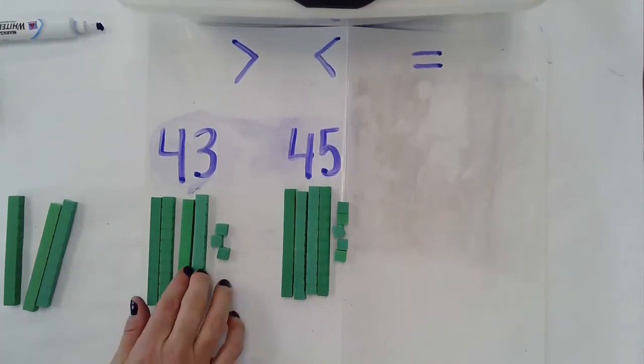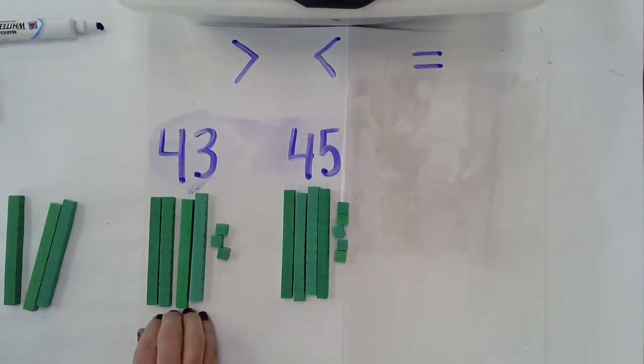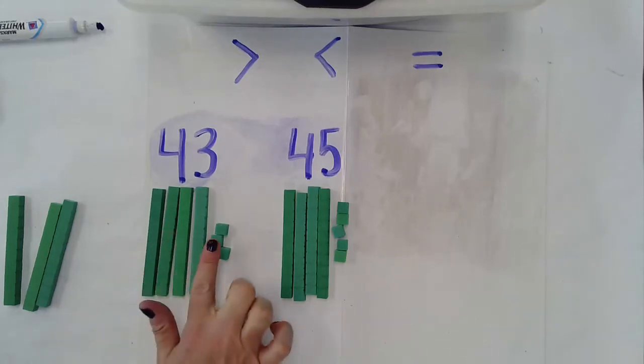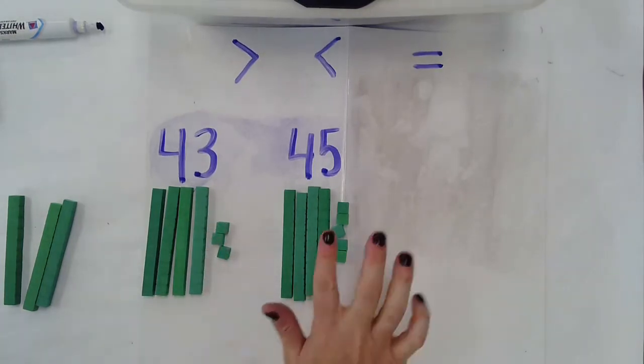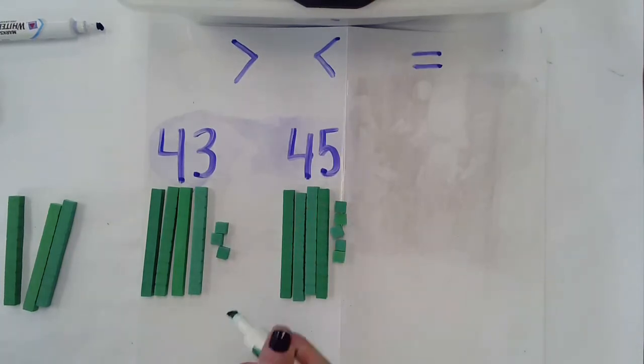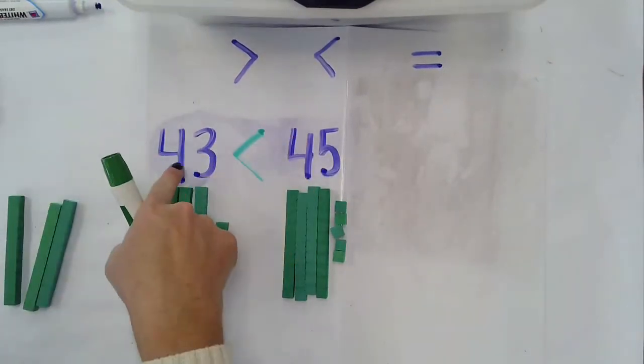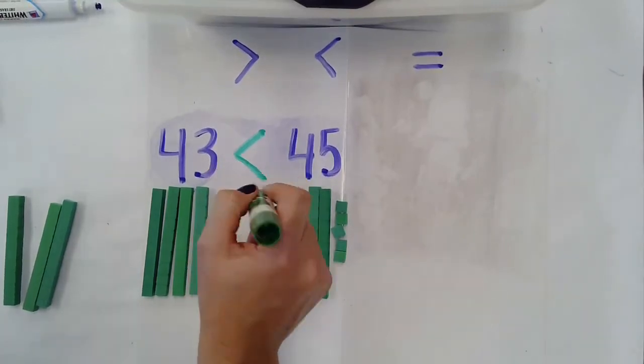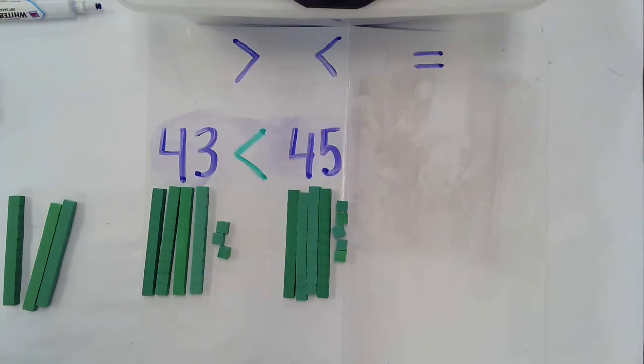So when I look at this one, I notice that they each have 4 tens. So I can't use the tens place to help me compare these numbers. Now I have to look at the ones place. So I see 3 ones over here and 5 ones over here and I know that 5 is greater than 3 so I know I'm going to use this symbol to compare because 43 is less than 45 and notice how my symbol kind of looks like an alligator's mouth and it's eating the biggest piece.